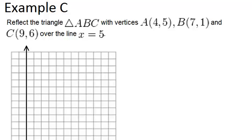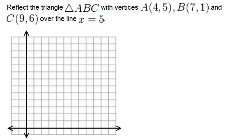In example C, it says reflect the triangle ABC with vertices A(4,5), B(7,1), and C(9,6) over the line X equals 5. So first let's set this up and plot the triangle and the line X equals 5.